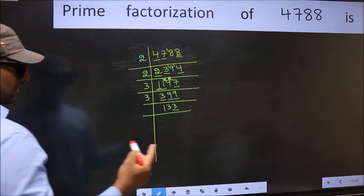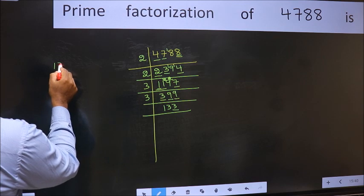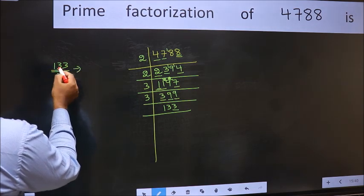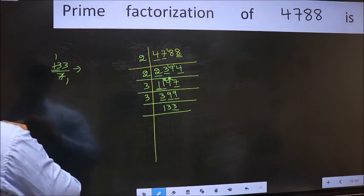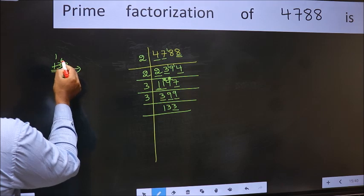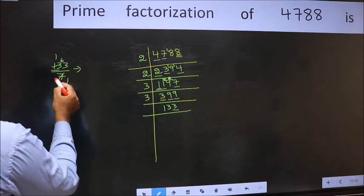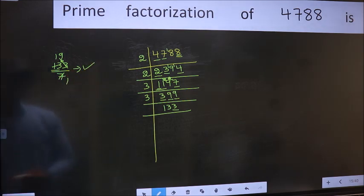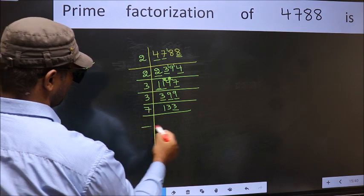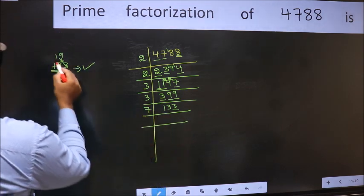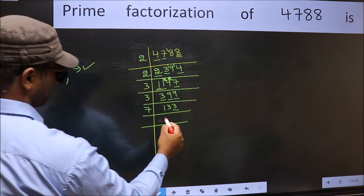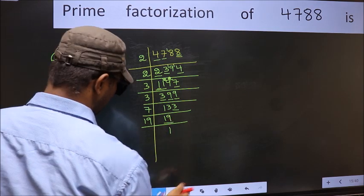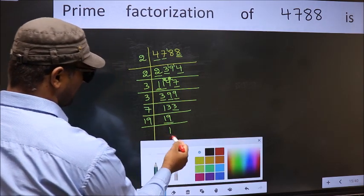Next prime number 7. Let us check divisibility by 7. A number close to 13 in the 7 table is 7 (7 ones). 13 minus 7 is 6, carried forward: 63. When do we get 63 in the 7 table? 7 nines are 63. No number has been left out, so this is divisible by 7. So 7 here, and we write the result 19. Now we have 19, which is a prime number. So 19 once is 19, and we get 1 here.